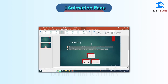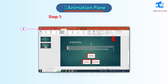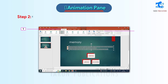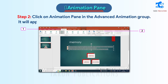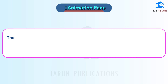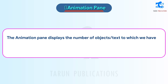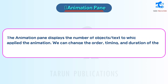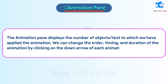Animation Pane. Follow these steps to open the Animation Pane. Step 1: Click on the Animations tab. Step 2: Click on Animation Pane in the Advanced Animation group — it will appear on the right side of the window. The Animation Pane displays the number of objects or text to which we have applied animations. We can change the order, timing, and duration of the animation by clicking on the down arrow of each animation.